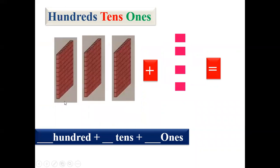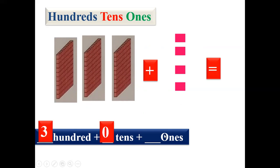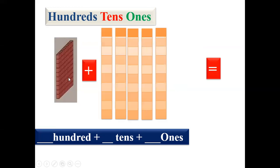Now look at the next one — one hundred, two hundreds, three hundreds. We'll write three hundreds. Now, children, we cannot see any tens block over there, so here we'll write zero tens. But here we can see ones: one, two, three, four — four ones are there, so we'll write four. The answer is three in hundreds, zero in tens and four in ones.